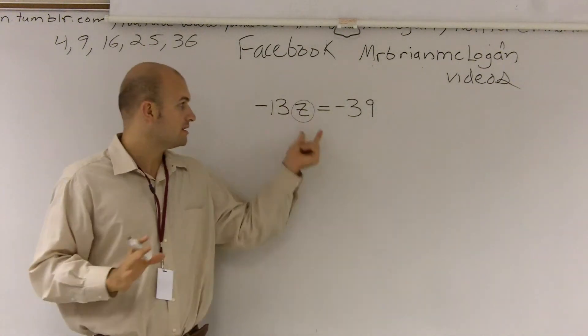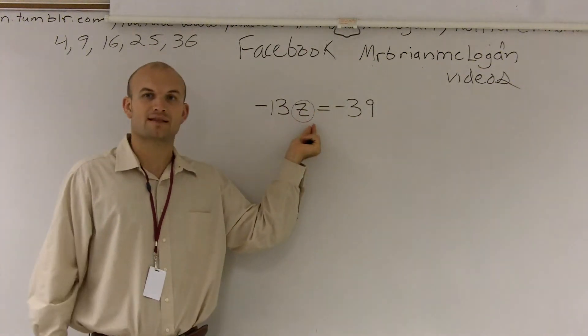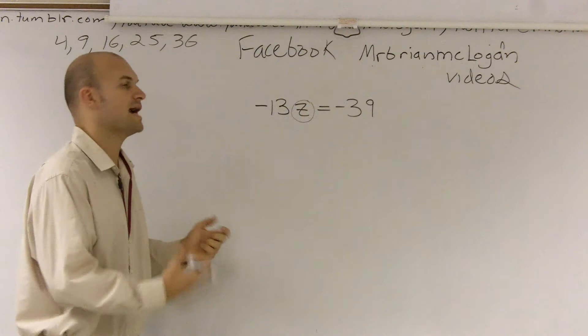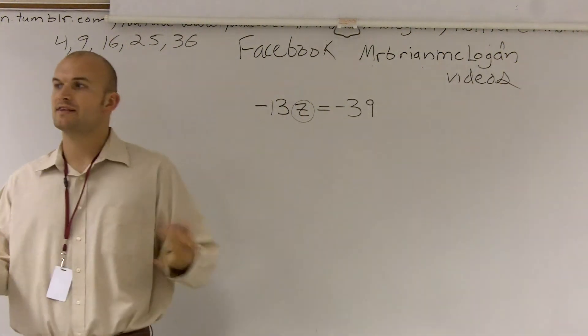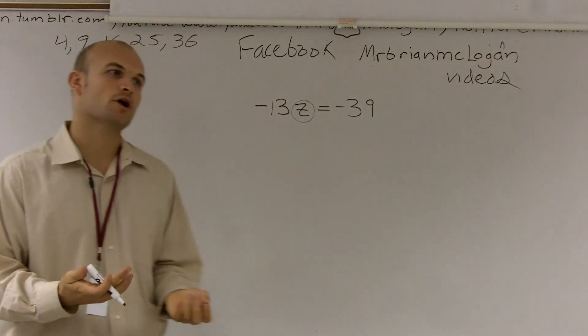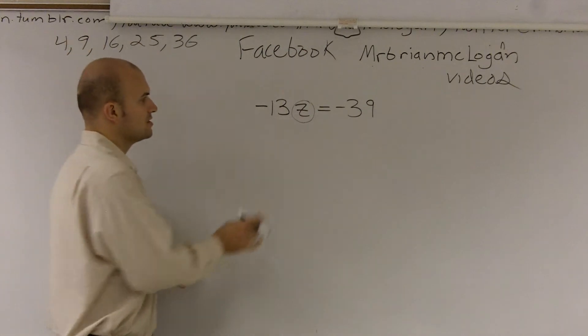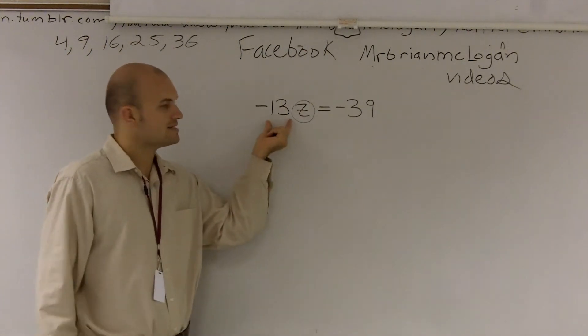I can't move it. I can't touch it. So I circle it. That means it's pinned right there. So now what I've got to do is I've got to undo everything that's happening to the z. A lot of times we call it the inverse operations. So right now, if you guys look at it, what's happening to the z?